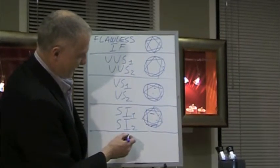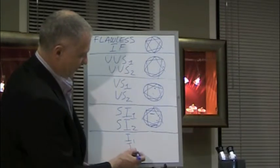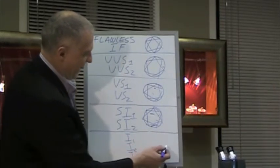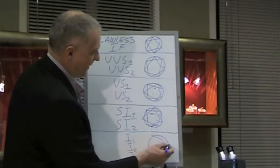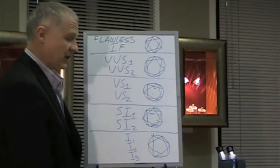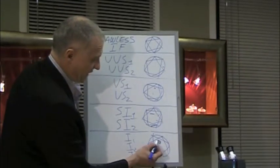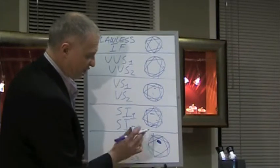But below an SI2 you get into the I1, I2, I3 range. And this is when you can start to see the individual flaws with the eye. You don't need magnification. So you're talking about quite pronounced characteristics so you can see them with the eye.